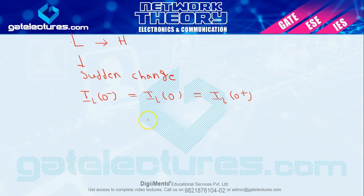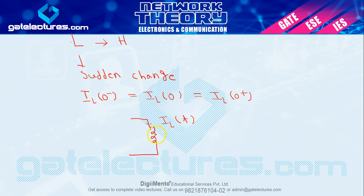The working principle of inductor: whenever time-varying current flows through the coil, a magnetic field is generated, which in turn generates magnetic flux. This magnetic flux is directly proportional to that time-varying current which generated it.